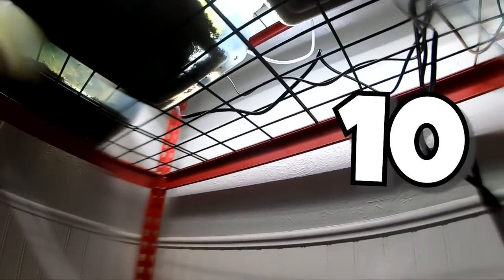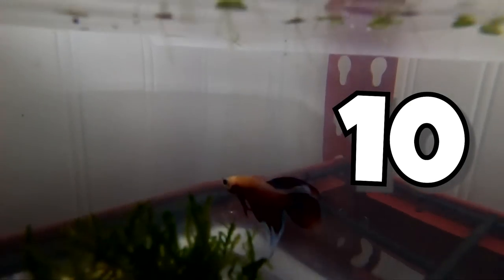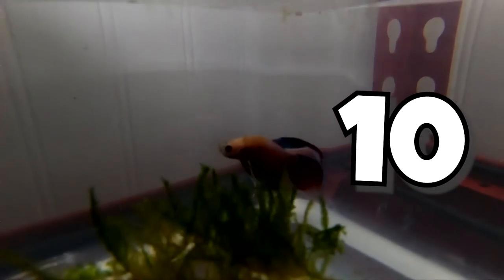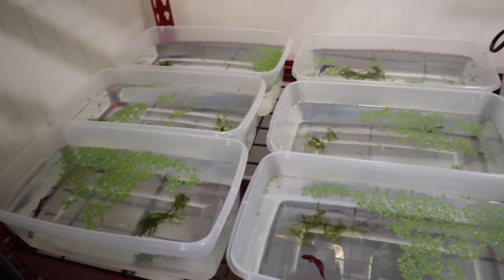Betta number four. Moving into the blue ones. We have betta number five. Number six. Number seven. Number eight. Number nine. And finally, this guy who has completely changed colors after I started feeding. Number 10.